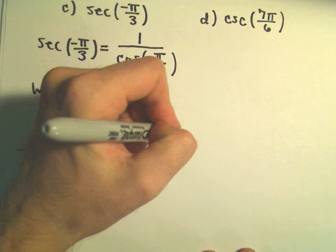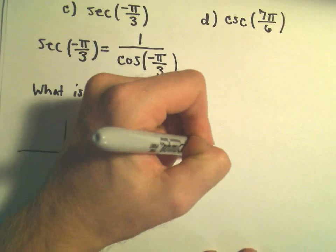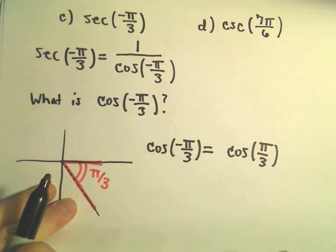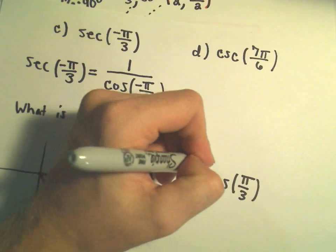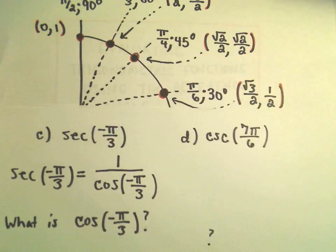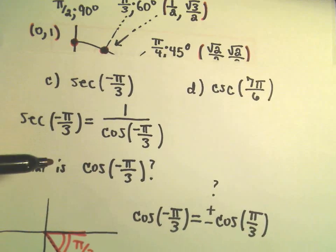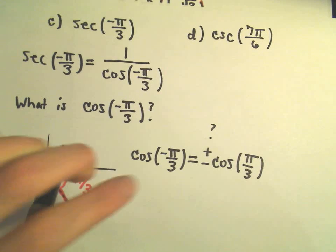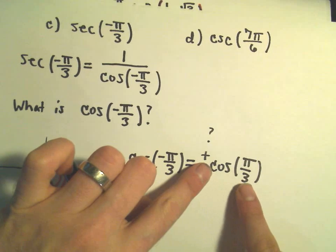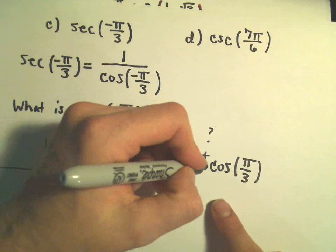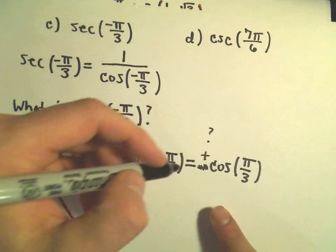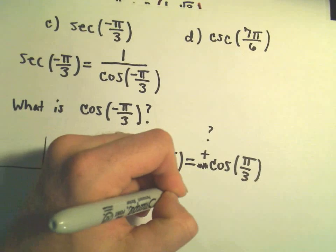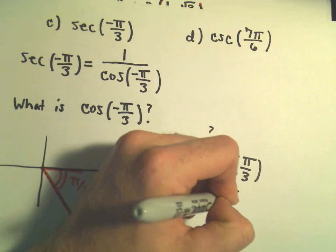So now I think: to use cosine of negative pi over 3, I'm going to replace that with its reference angle, which is just positive pi over 3. And I have to think — do I need the positive or the negative of that, because the sign can change. Cosine in quadrant 4, since it's the x-coordinate, it's already positive. When we use our reference angle, it's going to be positive by default because we're in the first quadrant. So we really don't need to include a negative. Cosine of negative pi over 3 is going to be the same thing as cosine of positive pi over 3.